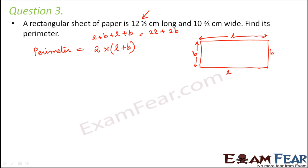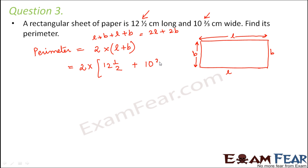Now in the question the length is given as 12½ and the breadth is given as 10⅔. So we will have to find out 2 times (12½ plus 10⅔). How can we add two mixed fractions?